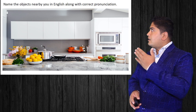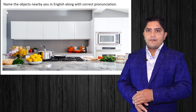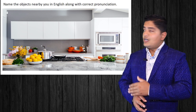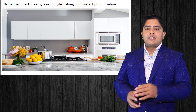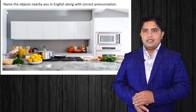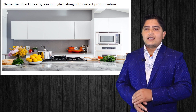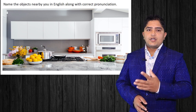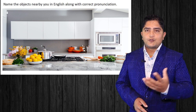For example, you can see this picture is of a kitchen. You can see some green vegetables over there, a gas stove, some oranges, bread, plates, a rice cooker, and so on. Try naming those things in English with correct pronunciation.